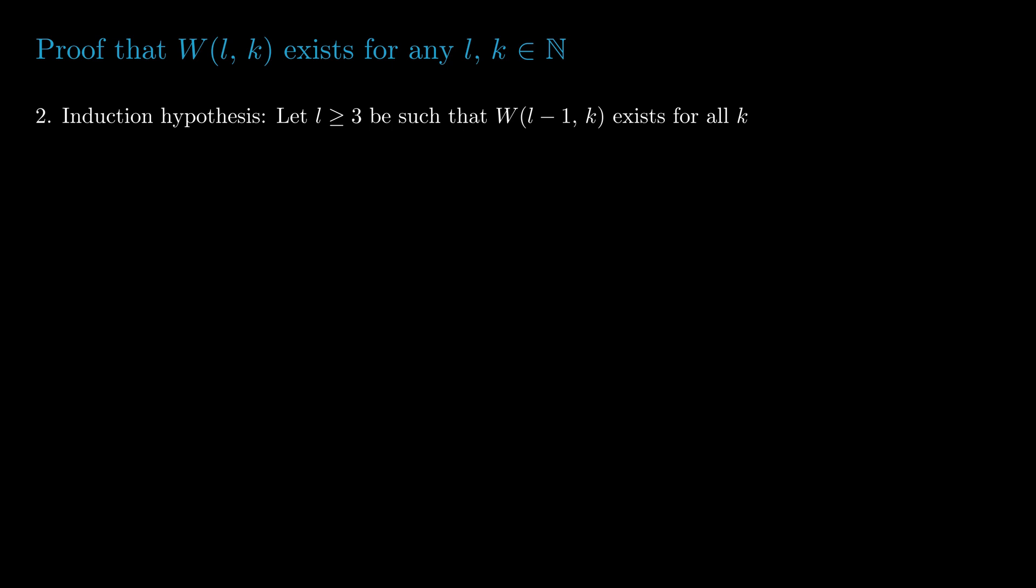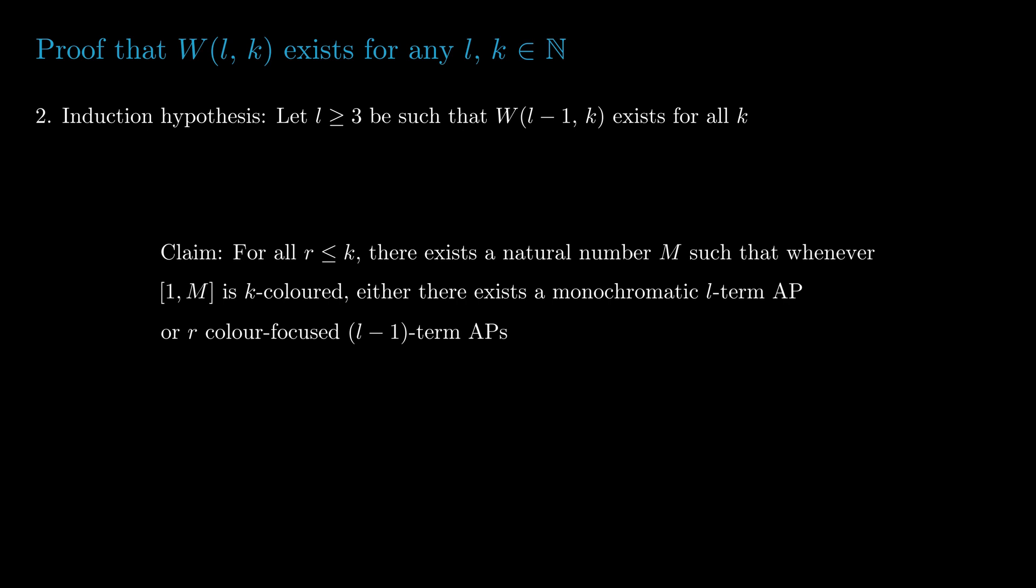As part of the inductive step, we will also prove a second claim: for all r ≤ k, there is a number M such that whenever we color the interval [1, M] using k colors, we will either have a monochromatic l-term AP or r spikes.